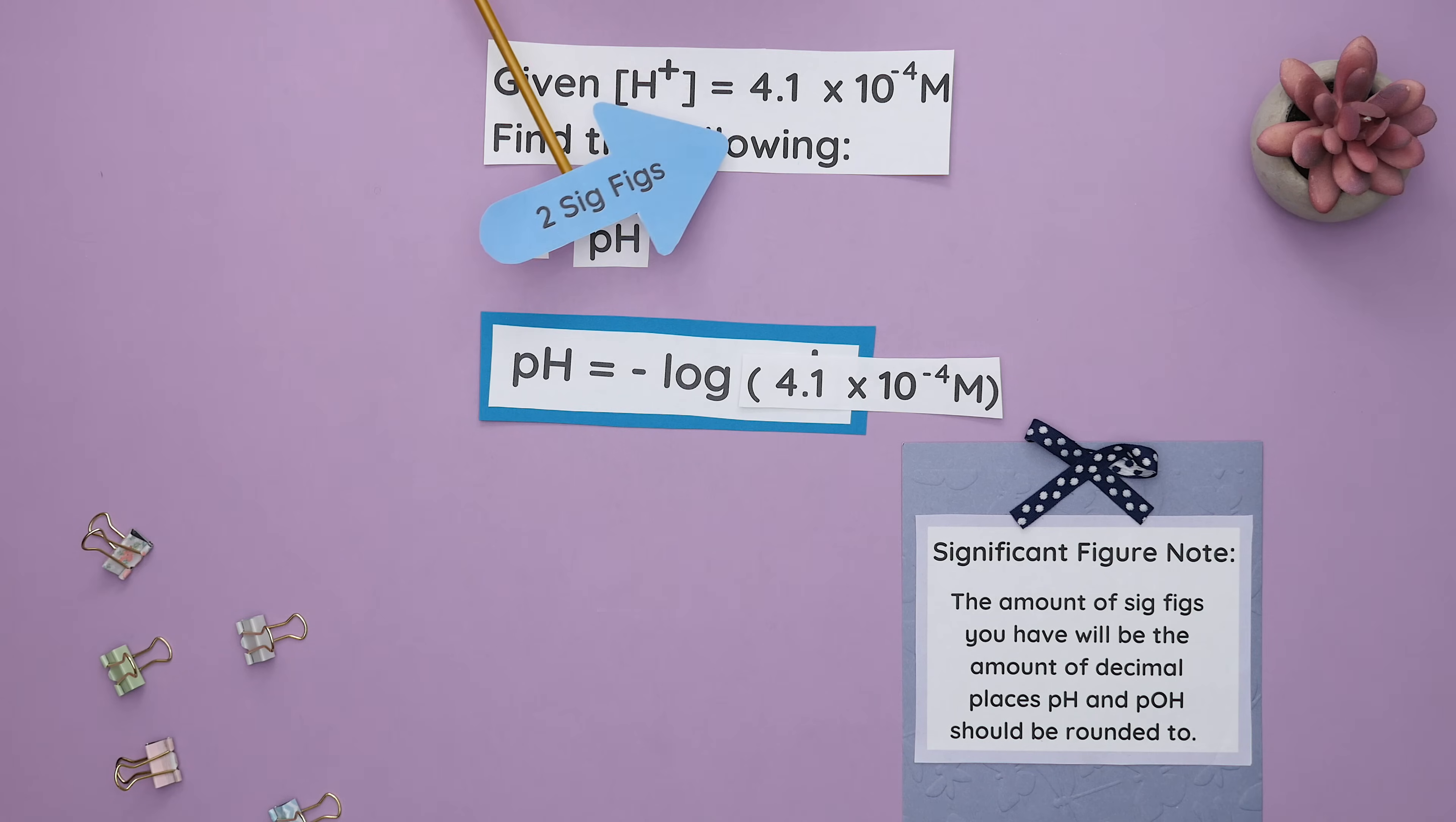the amount of sig figs you have will be the amount of decimal places the pH and pOH should be rounded to. This is why we get 3.39 as our pH.